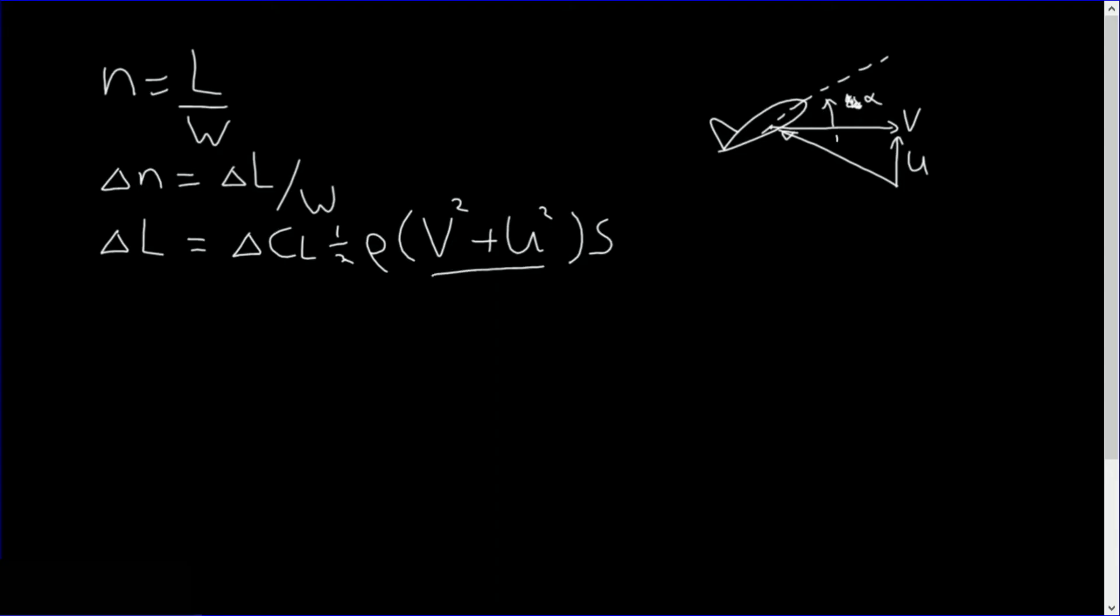And the change in the angle of attack, this angle here, delta alpha, you can find by simple trigonometry, and equal to the inverse tangent of u divided by v. Now in practice u will be quite a lot smaller than v, because airplanes fly pretty fast, and the gusts of course are much smaller in magnitude. So you could actually say that this whole relation here can be simplified by saying, well that's almost the same as v squared. You can also say that the change in angle of attack is actually almost the same as u over v.